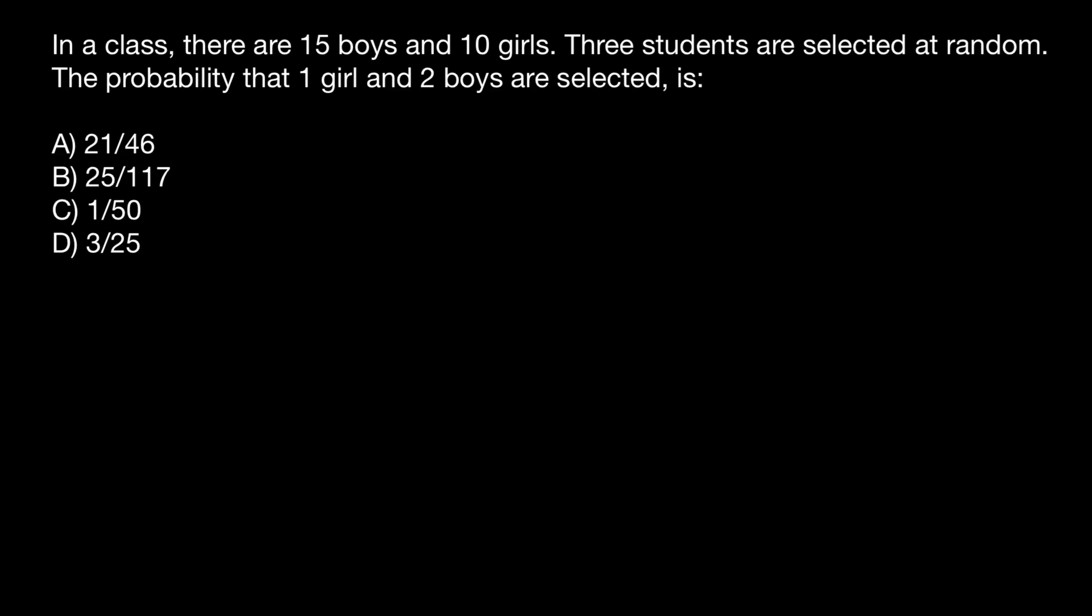Hello and welcome to Nikolai's genetics lessons. Today I have prepared another probability problem for you. Here's the problem: In a class there are 15 boys and 10 girls. Three students are selected at random. The probability that one girl and two boys are selected is... and you have to choose the correct answer.